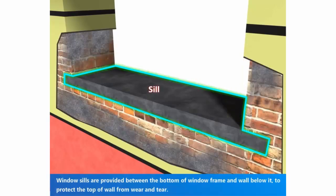Window sills are provided between the bottom of window frame and wall below it to protect the top of wall from wear and tear.